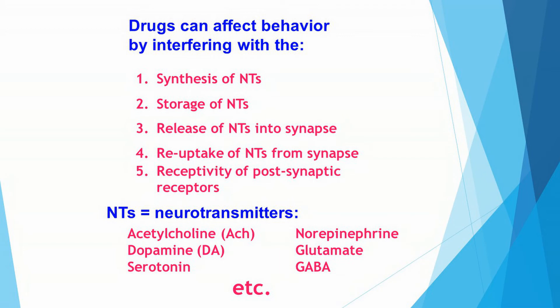Acetylcholine, dopamine, serotonin, norepinephrine, glutamate, GABA. And there are many, many other types of neurotransmitters, but these are some of the most important ones — the most well-known, well-researched neurotransmitters.